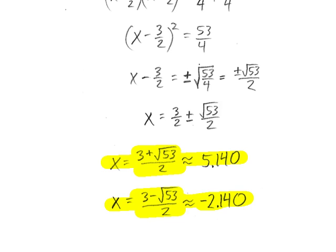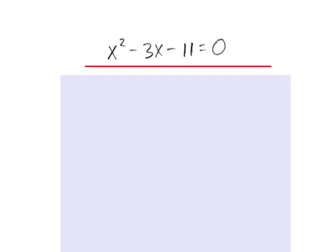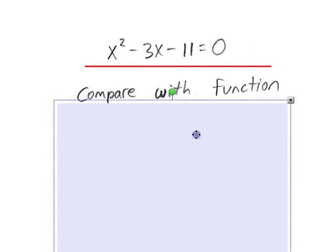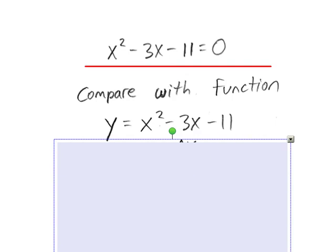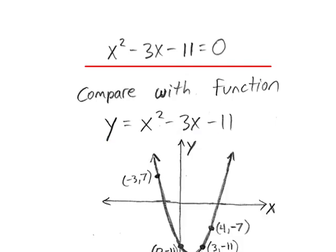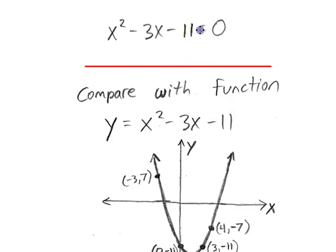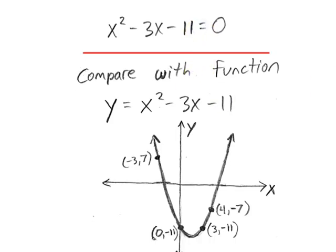This is one that we can do algebraically, but let's look at how we would solve the same problem graphically. Here it is again: x squared minus 3x minus 11 equals 0. I want you to compare that with this function, y equals x squared minus 3x minus 11. I basically just took that 0 and replaced it with a y. And when I take that function and plot it, I get an infinite number of points.